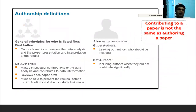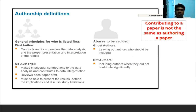Authorship definition: the first author should conduct and supervise the data analysis, and properly present and interpret the results. The co-author contributes to data analysis and reviewing of each draft, and must be able to present the results, defend the implications, and discuss the study limitations. Abuses to be avoided include ghost and gift authorship — where someone who contributes nothing to the paper demands to be listed as a third or fourth author. This should be totally avoided.